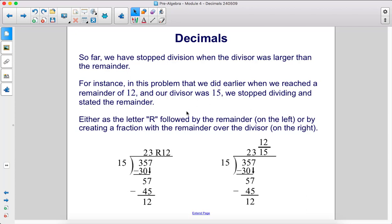For instance, in this problem that we did earlier, when we reached a remainder of 12 and our divisor was 15, we stopped dividing and we just stated the remainder, either as the letter R followed by the remainder or by creating a fraction with the remainder over the divisor.